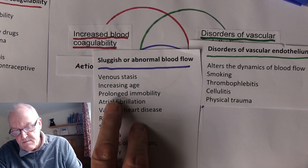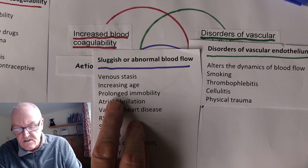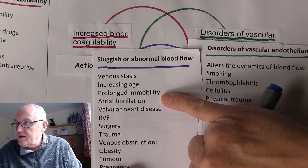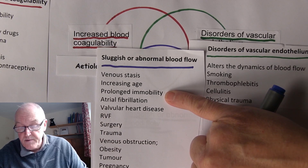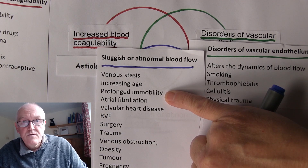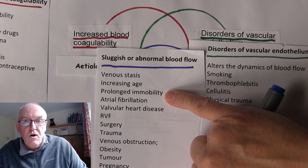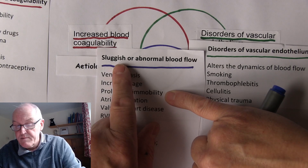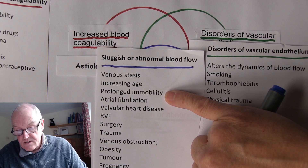Surgery is a particular risk factor because of immobility, especially when muscle relaxants are used. We can also think about prolonged immobility in work situations — working behind a computer for 10 hours a day without moving. Or consider travel situations: long-haul flights, long bus journeys, especially when cramped, where there will be sluggish or abnormal blood flow because venous return is dependent on the contraction of adjacent skeletal muscles.